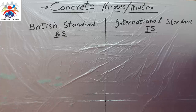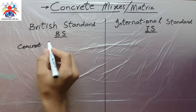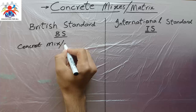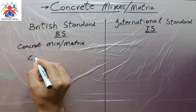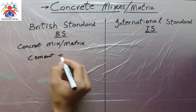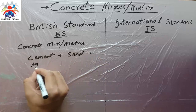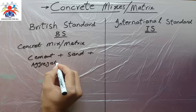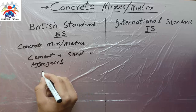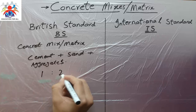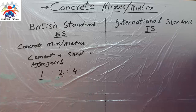What is a concrete mix basically? A concrete mix — or matrix — is cement plus sand plus aggregates. Normally we use a ratio like 1 to 2 to 4, where 1 is cement, 2 is sand, and 4 is aggregate.